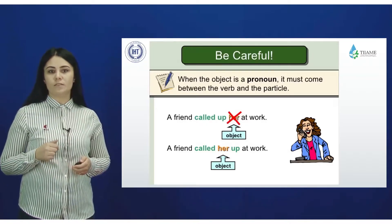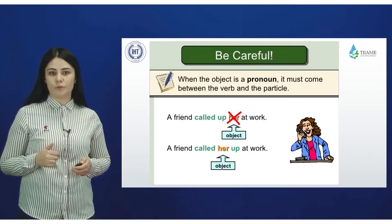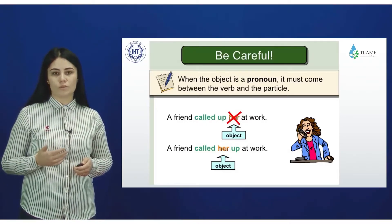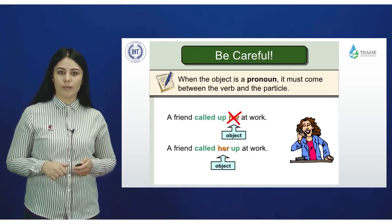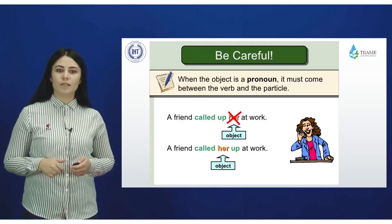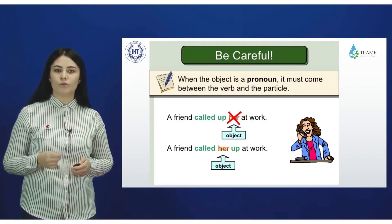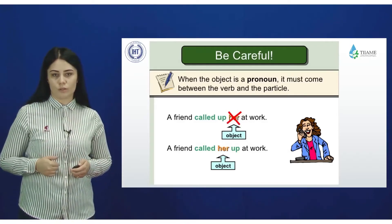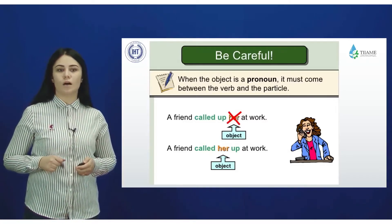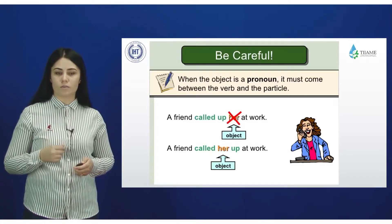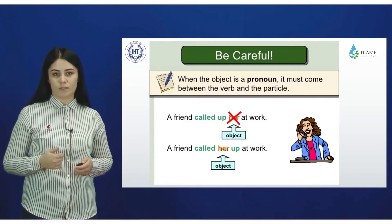When the object is a pronoun, it must come between the verb and the particle. So 'A friend called up her at work' is impossible. The correct form is 'A friend called her up at work.' Please be careful with pronouns.